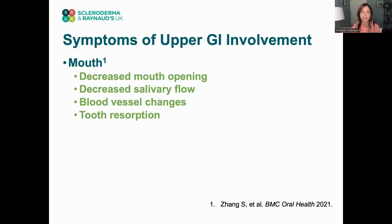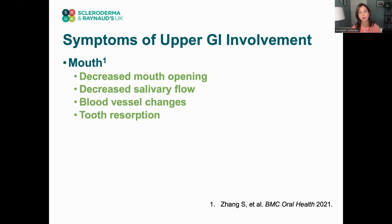There can also be changes that happen in the mandibles — the jawbone and the joints that connect the jawbone to the skull — which can also affect mouth opening. We also see decreased salivary flow, meaning the saliva normally produced to help digest food is reduced in scleroderma patients. We can see blood vessel changes in the mouth and sometimes ulcers can appear. As the disease progresses, patients can have something called tooth resorption, where they can actually lose teeth.